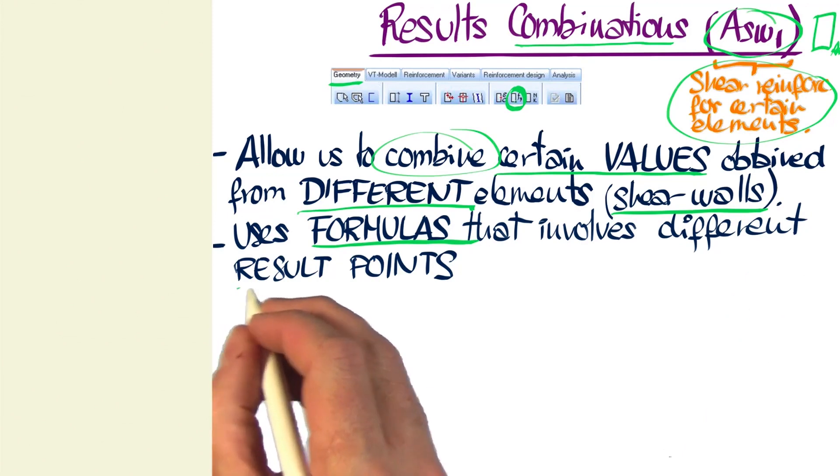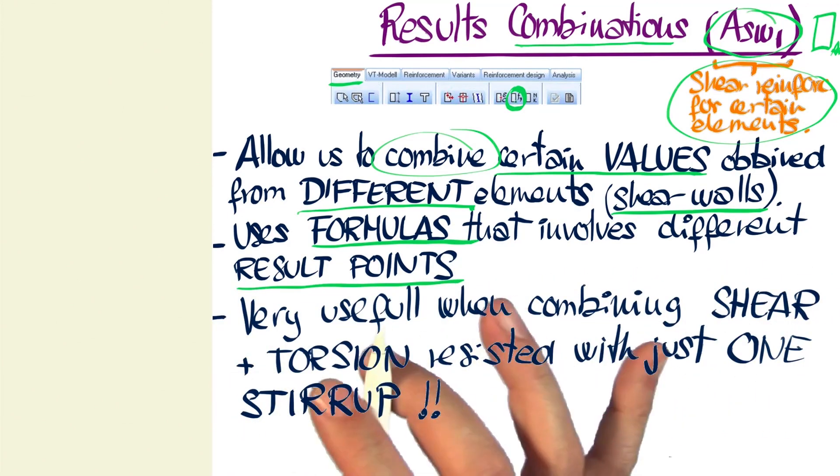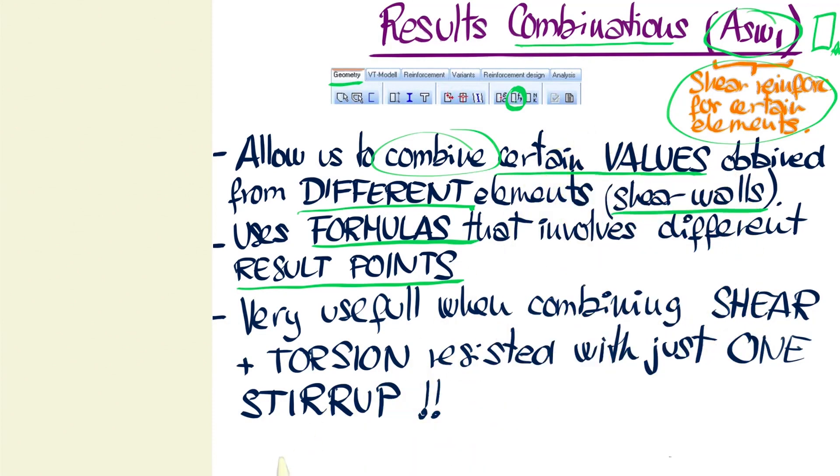We'll also see that the combinations of results will be highly useful for our transversal reinforcements, since they will allow us to combine, for example, the result of a shear wall with the minimum steel reinforcement ratio.